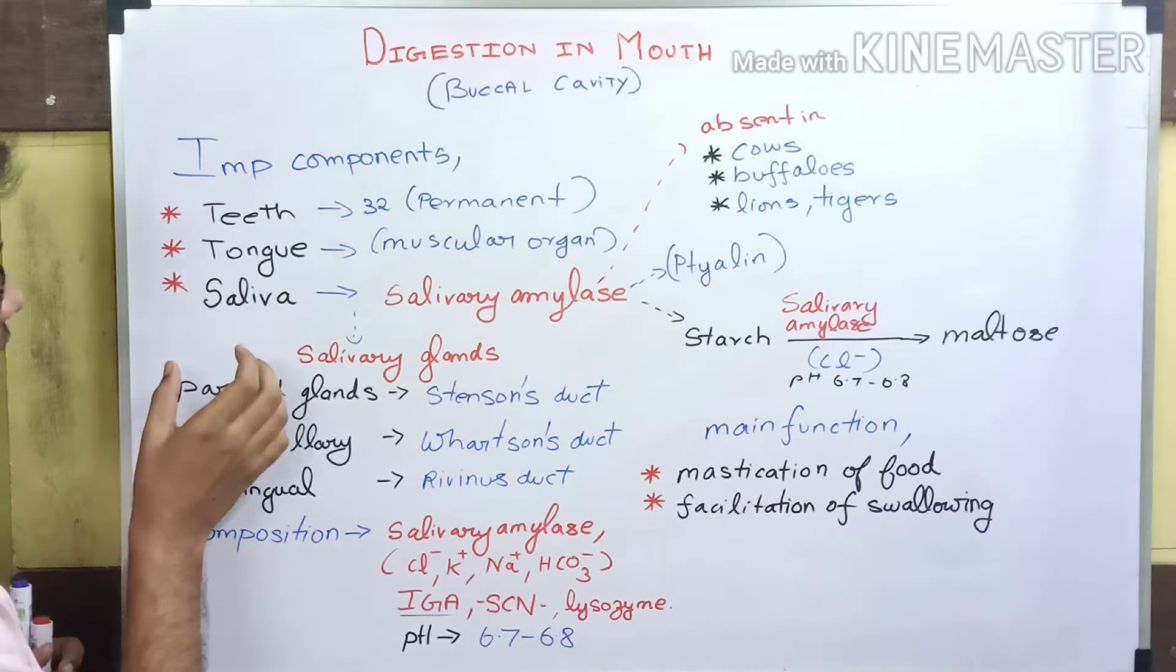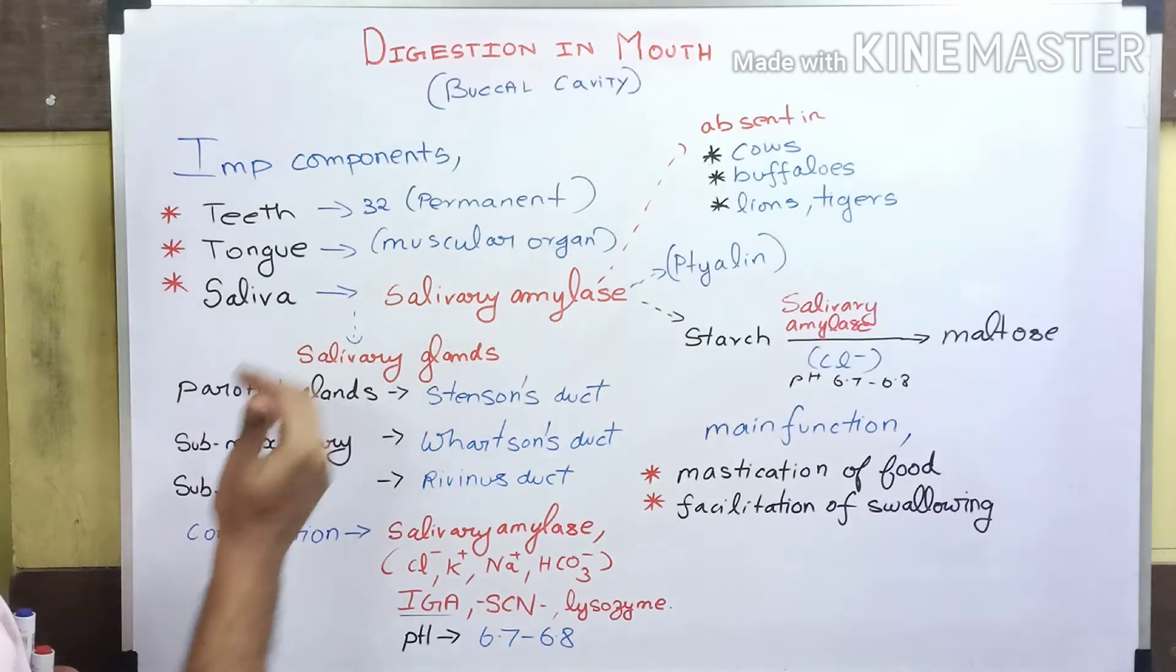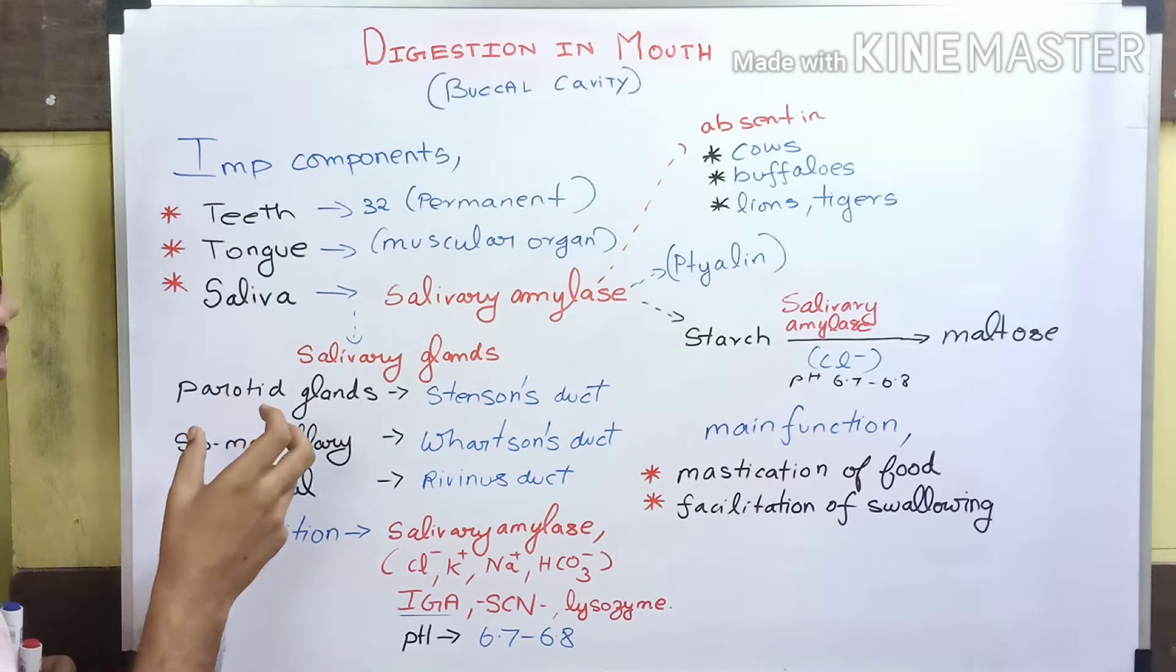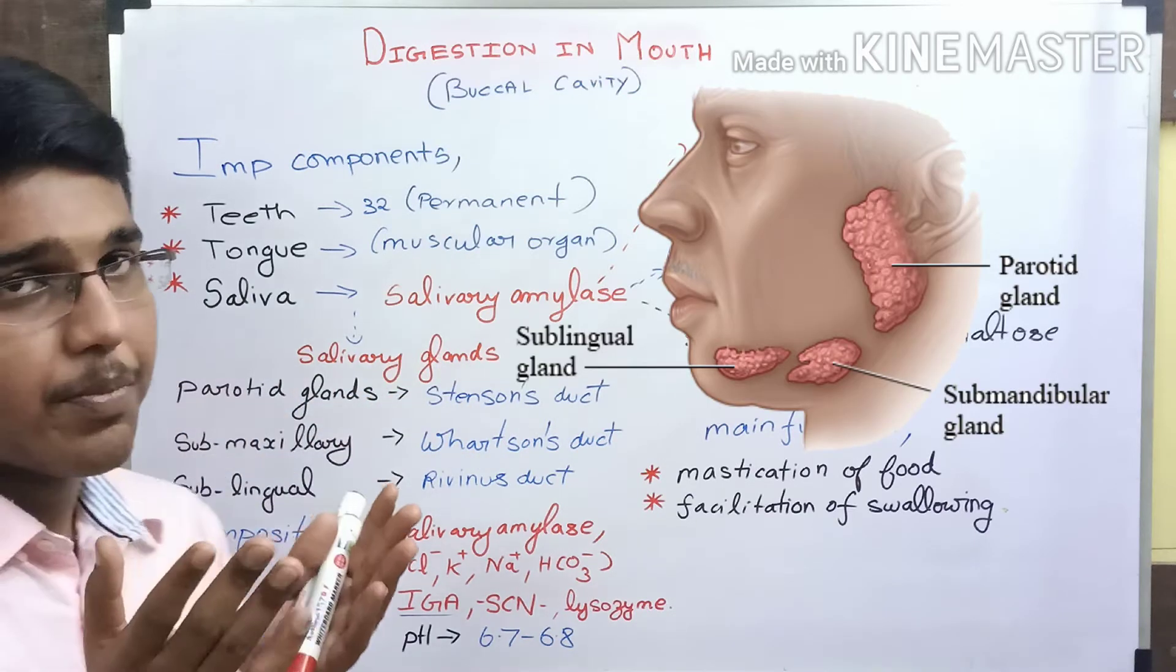The next component is saliva. Saliva contains salivary amylase enzyme. Before moving to salivary amylase, let us discuss the production of saliva. Saliva is produced by salivary glands present around the buccal cavity.